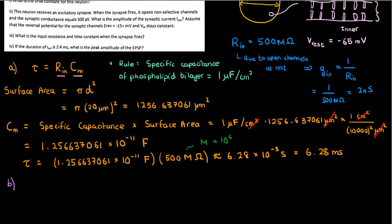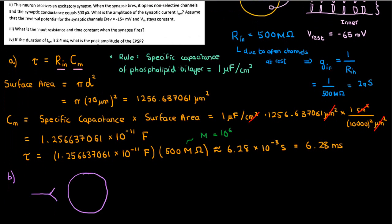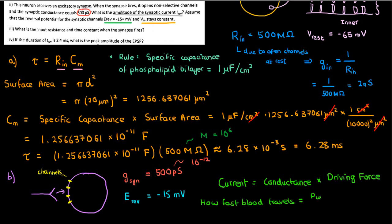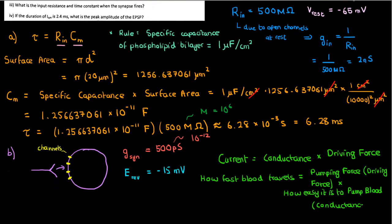The neuron receives an excitatory synapse, something like in this diagram. When that synapse fires, it opens a bunch of non-selective channels with a synaptic conductance of 500 picosiemens — pico means 10 to the power negative 12. What is the amplitude of the synaptic current given that the reversal potential is negative 15 millivolts and the membrane potential Vm stays constant? The current through a channel is just the conductance multiplied by the driving force — analogous to how fast blood travels through a system being the product of how forcefully it's pushed times how easy it is to push.